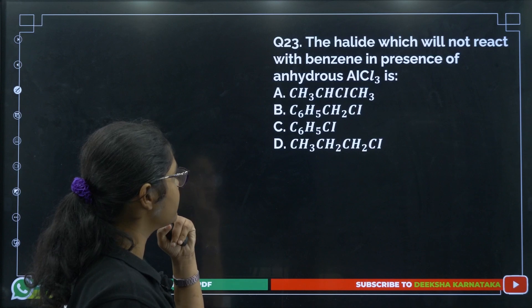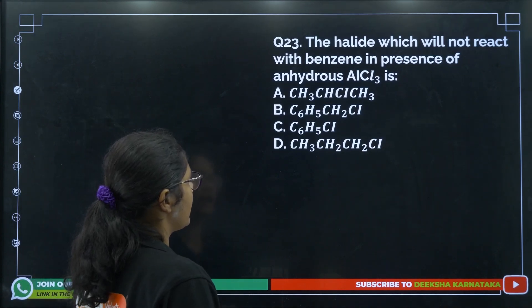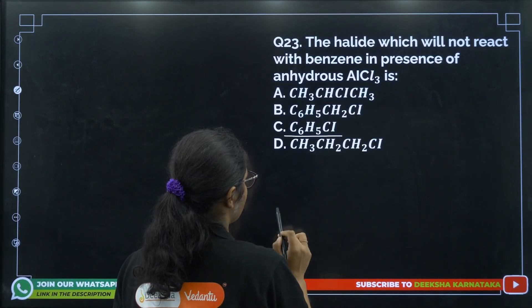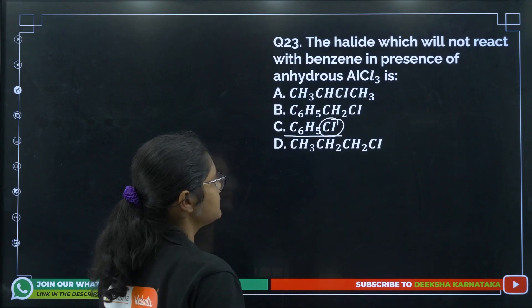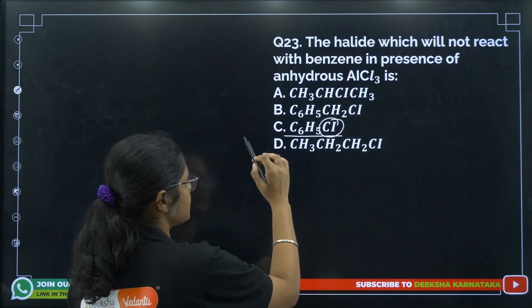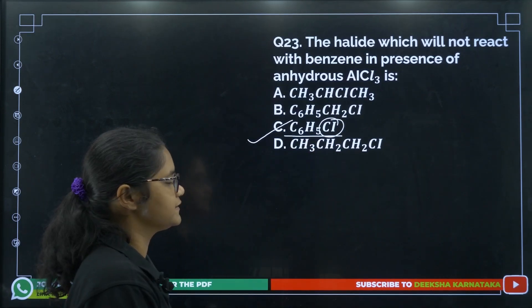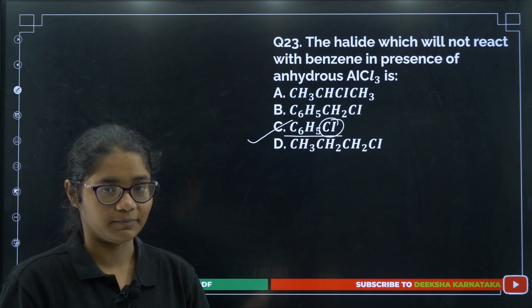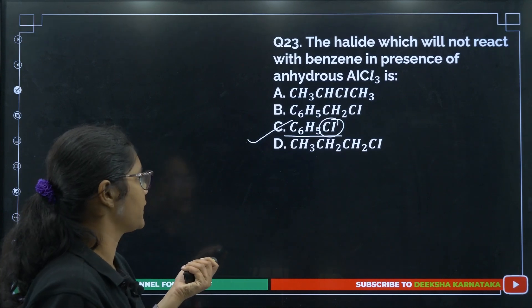Question 23: Which alkyl halide will not react with benzene in the presence of anhydrous AlCl3? If you remember, haloarenes are not reactive because the halogen directly on the ring cannot be replaced. So the answer is option number C.